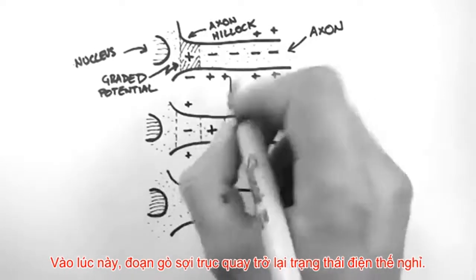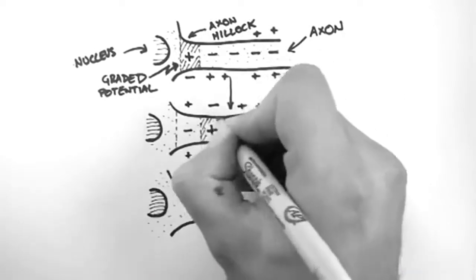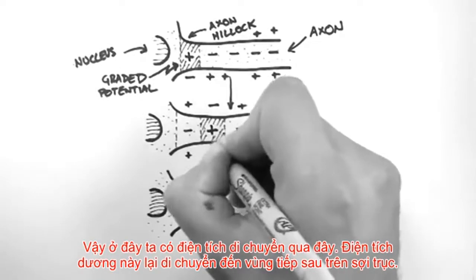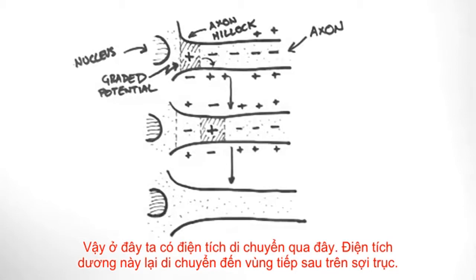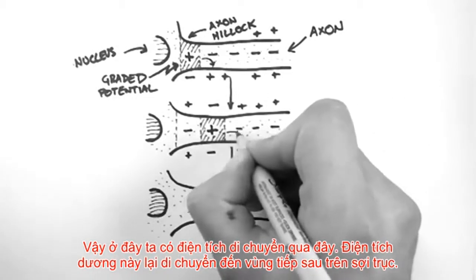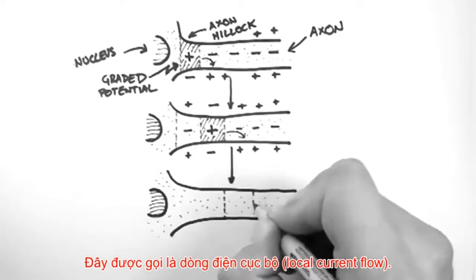Meanwhile, the axon hillock returns to its resting membrane potential. So here's the charge flowing across here, and this positive charge flows into the next segment of the axon. This is known as local current flow.